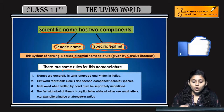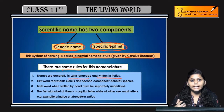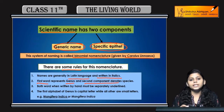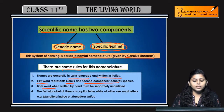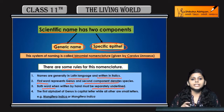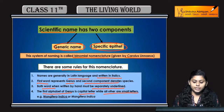There are some rules for scientific names. Scientific names are always written in Latin language and in italics font. The first word represents the genus and the second word represents the species. The genus name and species name must be separately underlined. The first letter of the genus is capitalized, while the rest of the letters are written in small case. For example, the scientific name of mango is Mangifera indica, written in italics with the first letter capitalized.